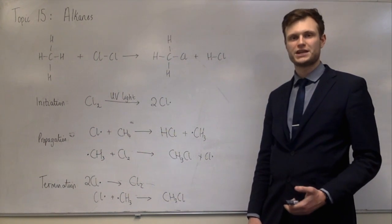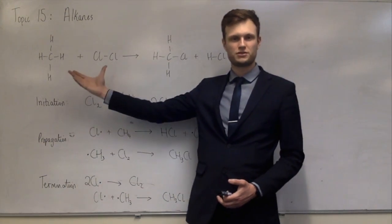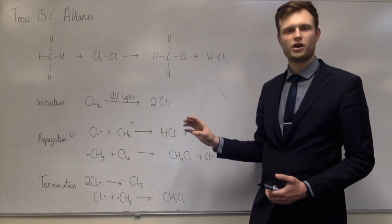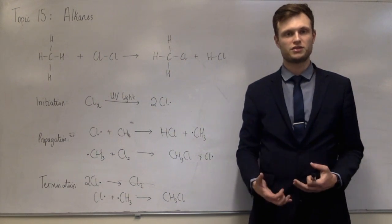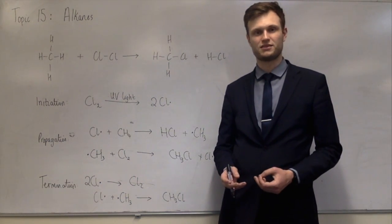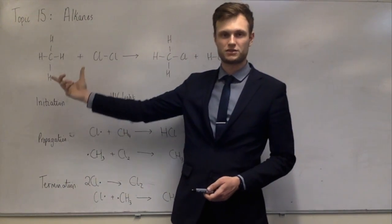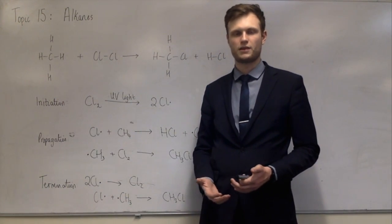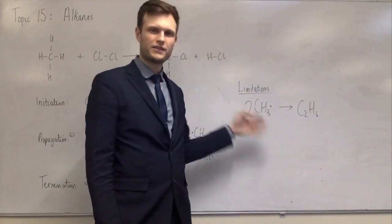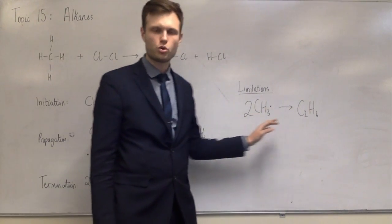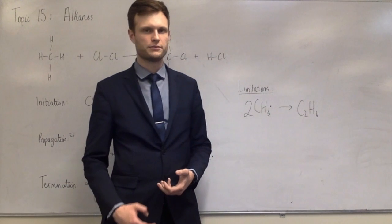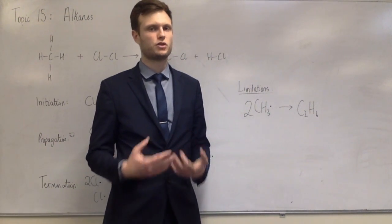The third termination step — two methyl radicals reacting together — creates ethane. Ethane is not one of the products or reactants; it's something which shouldn't be in the reaction, so it's a limitation. It stops the reaction from being useful, because you have to remove that ethane at the end. This is the limitation they often ask you to write an equation for, because it's so similar to the other termination steps.